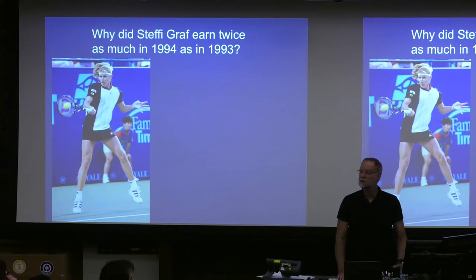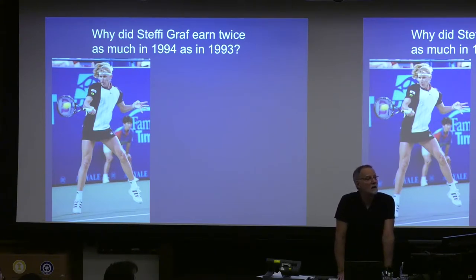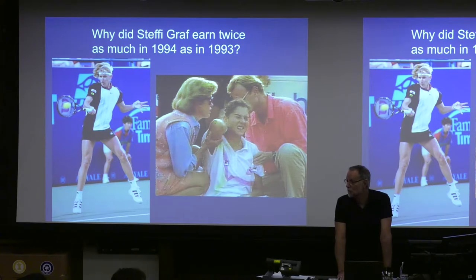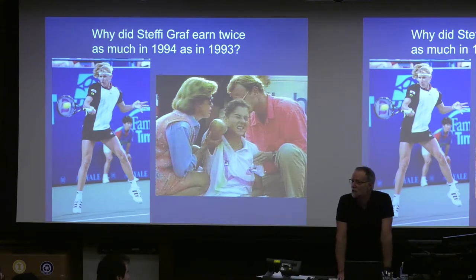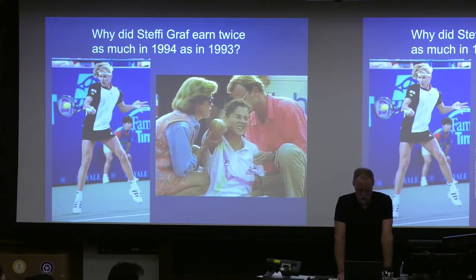Once TV gate became the dominant share of revenue, income started piling up on the top-ranked performers, because those were the people the audience really wanted to see, and now everyone could watch them. Why did Steffi Graf earn twice as much in 1994 as in 1993? She was playing at the top of her game all through that decade. The conspicuous change was that Monica Seles wasn't playing in 1994 — she'd been stabbed in the back at a tournament in Hamburg by a deranged fan of Graf's. Seles was off the tour for 18 months and never came back to full form. Graf won twice as much money the next year playing at the same absolute standard, because how much you win depends on your rank, not on how you play in absolute terms.